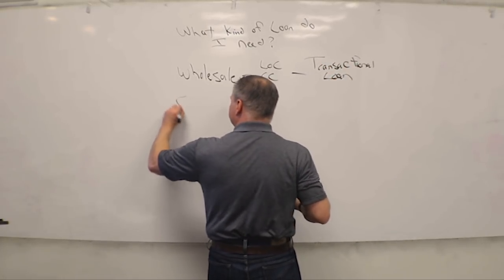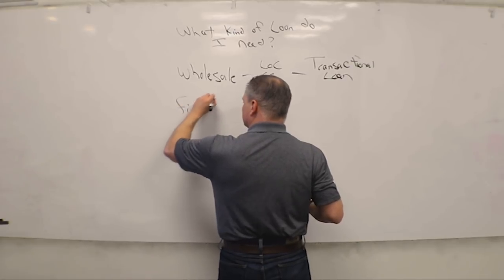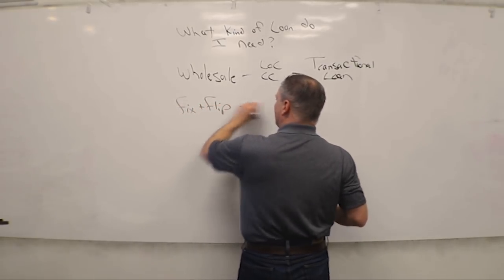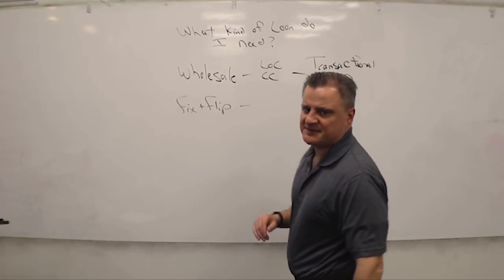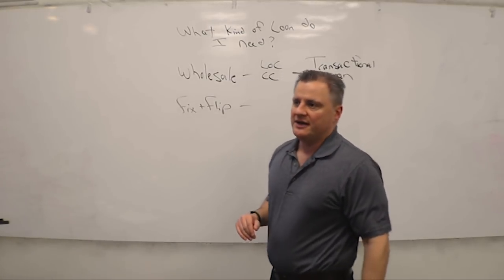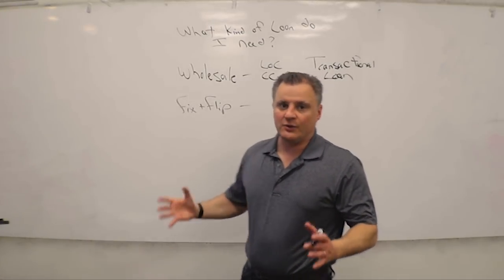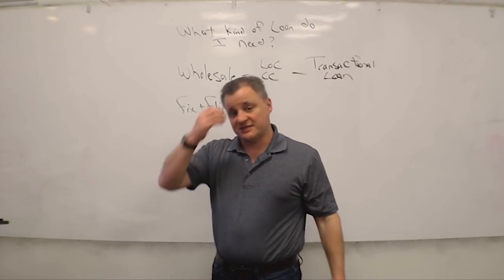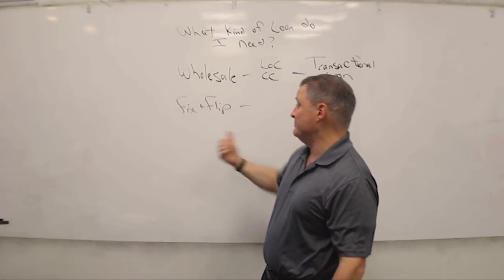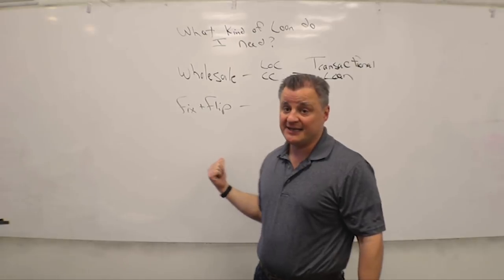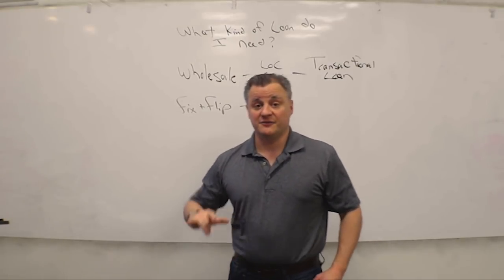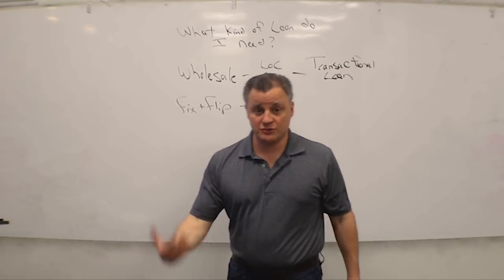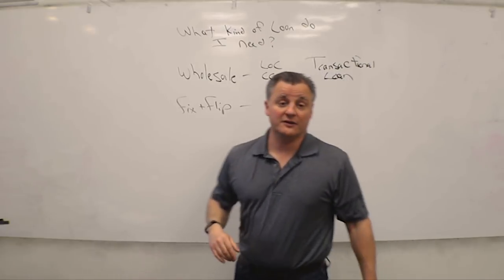Let's say you got a fix and flip. Fix and flips are short-term products. And what's interesting about a fix and flip, which also applies to the BRRRR method, is you need construction money. And if you play your cards right, you can borrow your construction money from your lender as well.